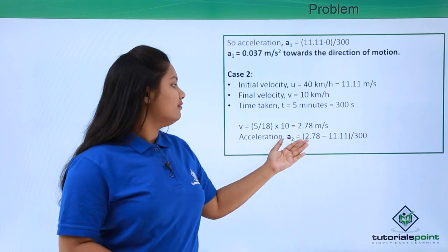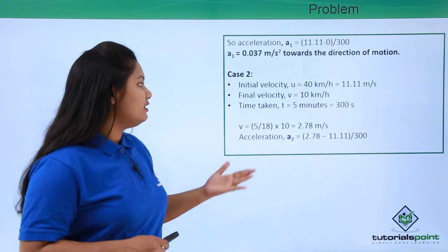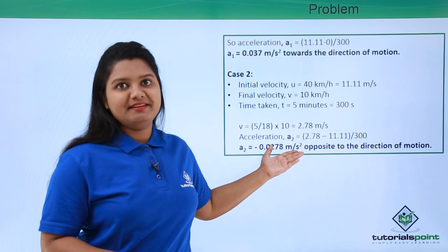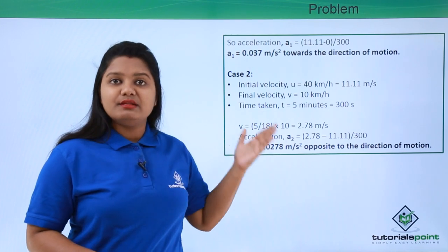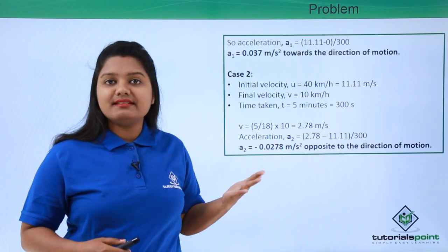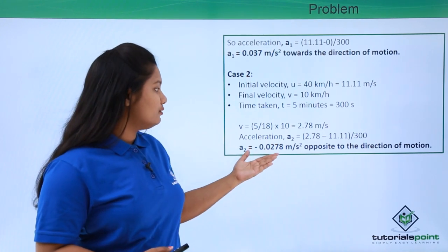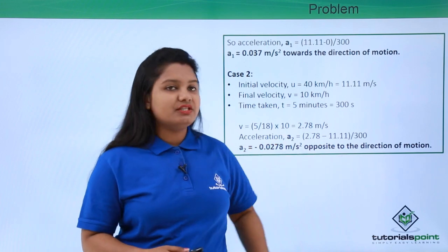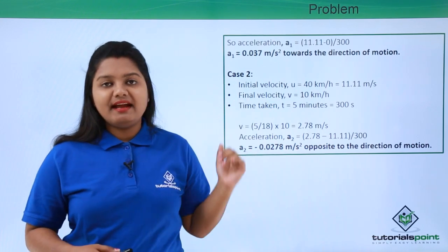So the acceleration for Case 2 equals 2.78 minus 11.11 divided by 300, which yields minus 0.0278 meters per second squared. This acceleration is negative because brakes were applied and there was a decrease in velocity. Whenever there is a decrease in velocity, the acceleration acts opposite to the direction of motion — so this acceleration is in the opposite direction to the motion of the body.